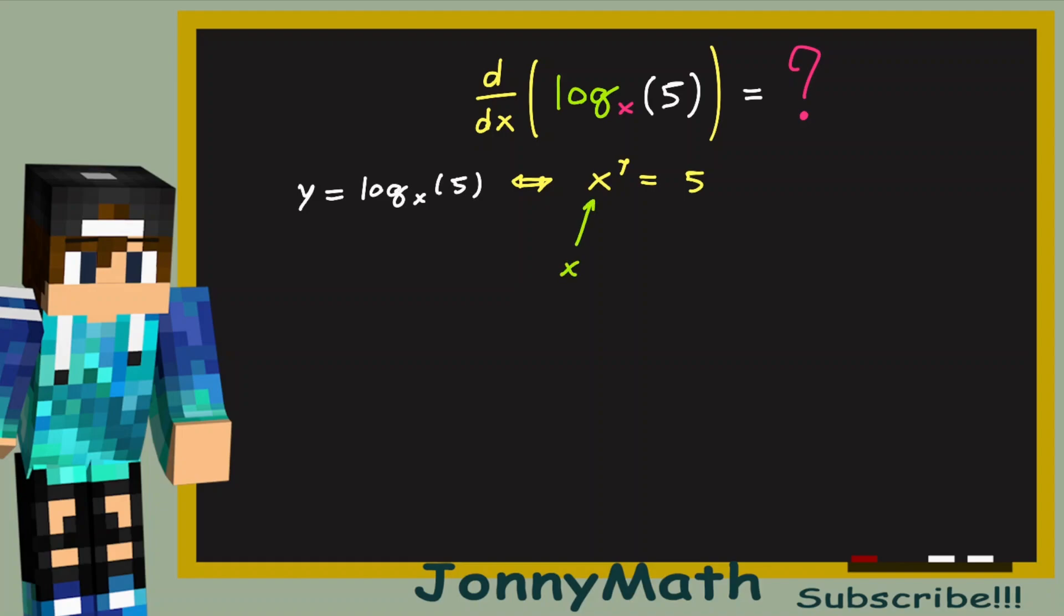Firstly, you may have noticed that x cannot be equal to 1, because 1 to the y, that is a number, the value of our function, but we don't care at the moment, it is just a number, always equals 1, so it cannot be equal to 5. So x cannot be equal to 1.